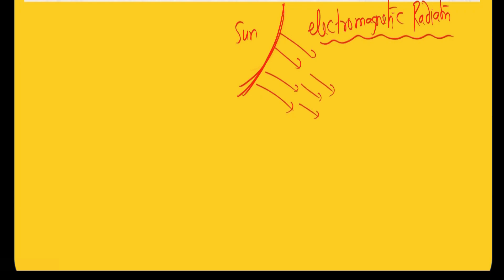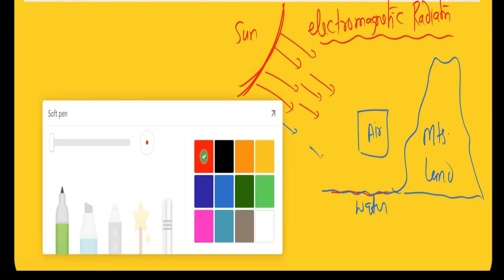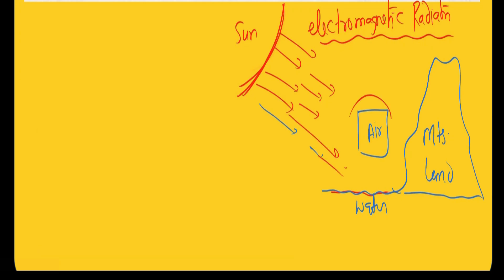Lots of heat energy is coming onto the Earth's surface. On the Earth's surface we have water bodies, air around, mountains, and land surfaces. These radiations are absorbed by the air, by the land surface, and by the water.